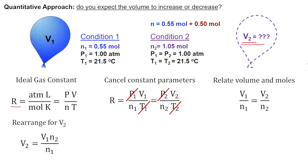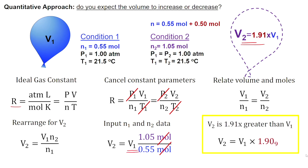Now, we can plug in the information that we're given. We know our final and initial amount of moles of helium. Our N2 is 1.05 moles and our N1 is 0.55 moles. Even though we aren't provided with the initial volume, we can still calculate that our volume V2 is going to be 1.91 times greater than V1, leading us to our same conclusion that volume is expected to increase.